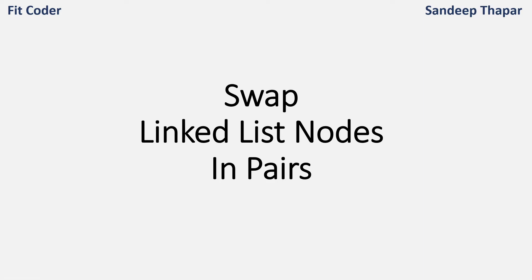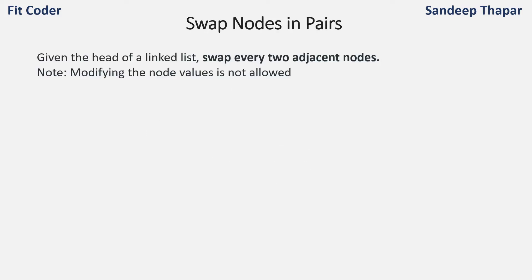Hi everyone. In this video we will discuss how to swap linked list nodes in pairs. We are given a head of a linked list and we need to swap every two adjacent nodes. We need to modify the links of the nodes — modifying the node values is not allowed.